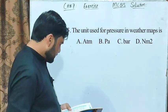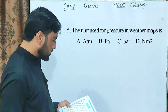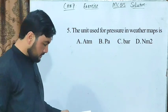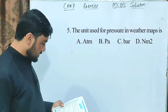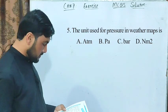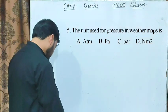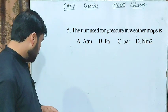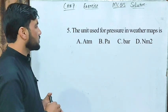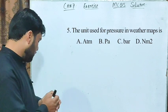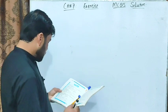MCQ number 5 statement: the unit used for pressure on weather maps is — Option A: atm. Option B: pascal. Option C: bar. Option D: newton per meter square. The unit used for pressure measurement on weather maps is bar. Correct option is C.